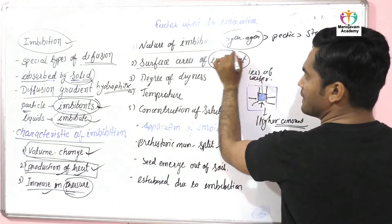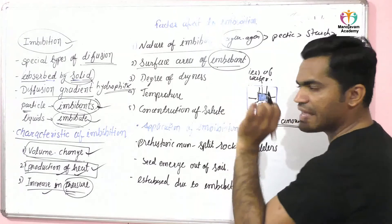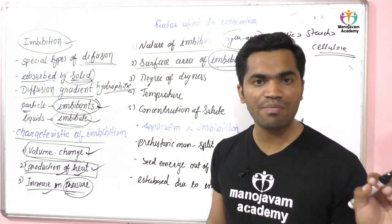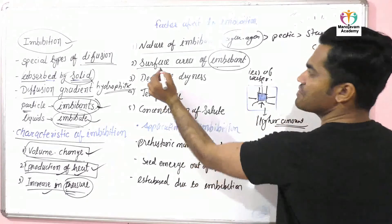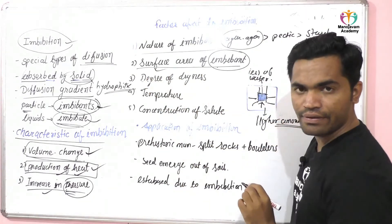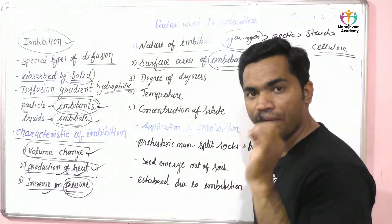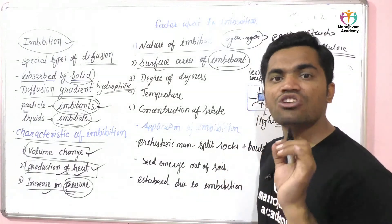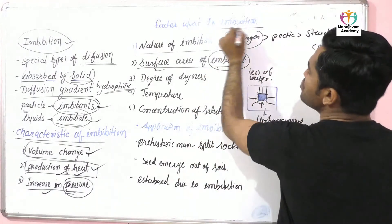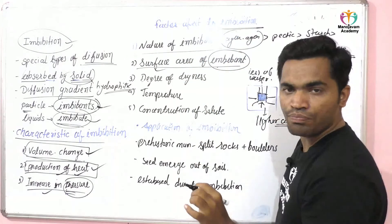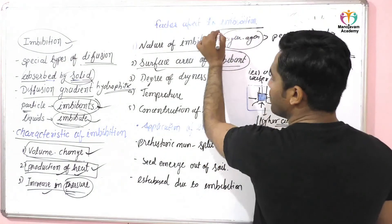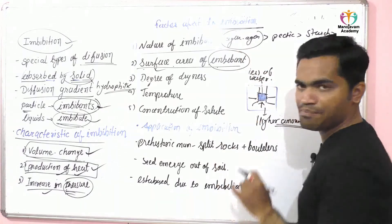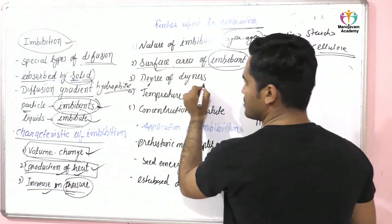The second factor is the surface area of the imbibant particle. If the surface area is more, it is proportional to imbibition — that means if the surface area is higher, the imbibition process will increase. If the surface area is low, the imbibition process will be less.